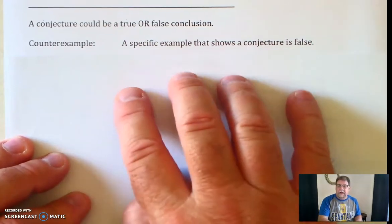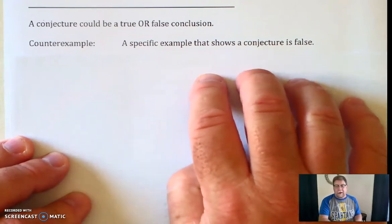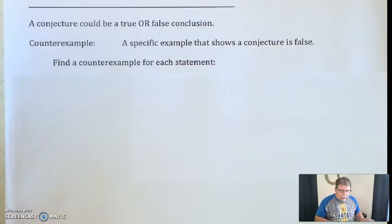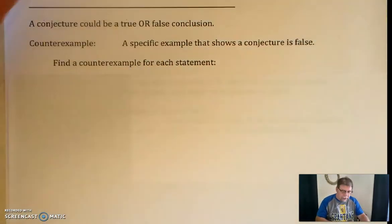In other words, the first part of the sentence, the first part of the conjecture has to be true. The second part is false. So let's look for a counterexample in each of these statements.